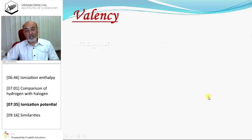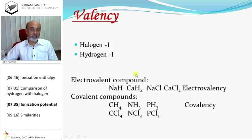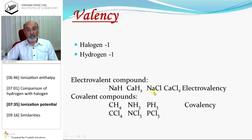Valency: hydrogen can accept one electron, so its oxidation state is minus one. Halogen can also accept one electron, so they are also minus one. Electrovalent compounds: sodium hydride and calcium hydride are examples of hydrogen's electrovalent compounds; similarly, halogens form electrovalent compounds like NaCl and calcium chloride.